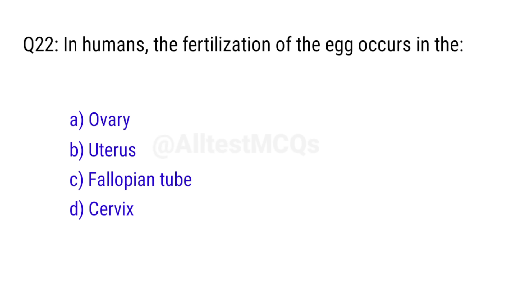Q22. In vivo means the fertilization of the egg occurs in the? Right answer is option C, fallopian tube.